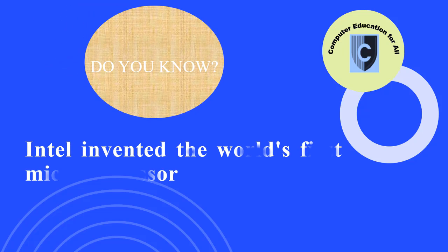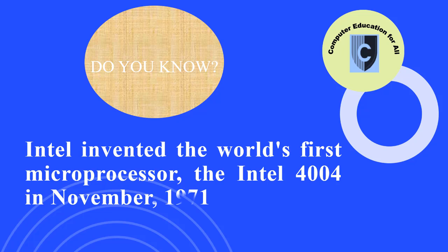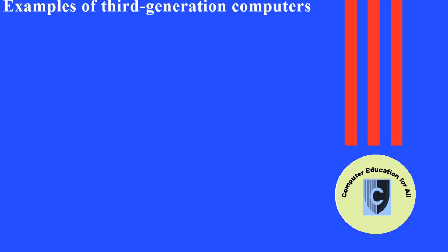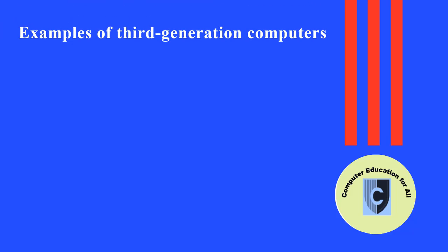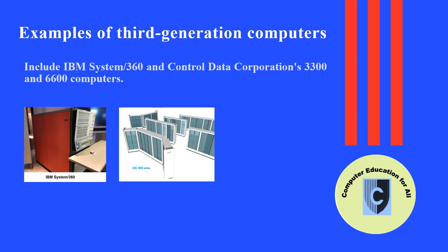Intel invented the world's first microprocessor, the Intel 4004, in November 1971. Examples of third generation computers include the IBM System 360 and Control Data Corporation's CDC 6600 computers.